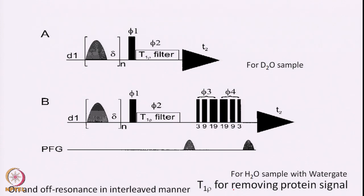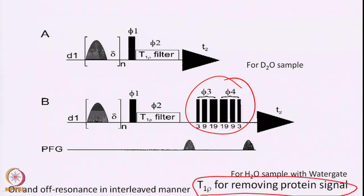The pulse sequence is done essentially in D2O to remove water background, though you can do it in H2O with water suppression (watergate). You need a T1-rho filter to remove the protein signal. The experiment is simple: saturation, then a 90-degree pulse, then T1-rho filter for removing protein signal, then detection. You increase the saturation time by increasing N. You do two experiments - on-resonance and off-resonance - in an interleaved manner and subtract them to save time. As you keep increasing saturation, more and more peaks will be affected, telling you the group binding epitope.